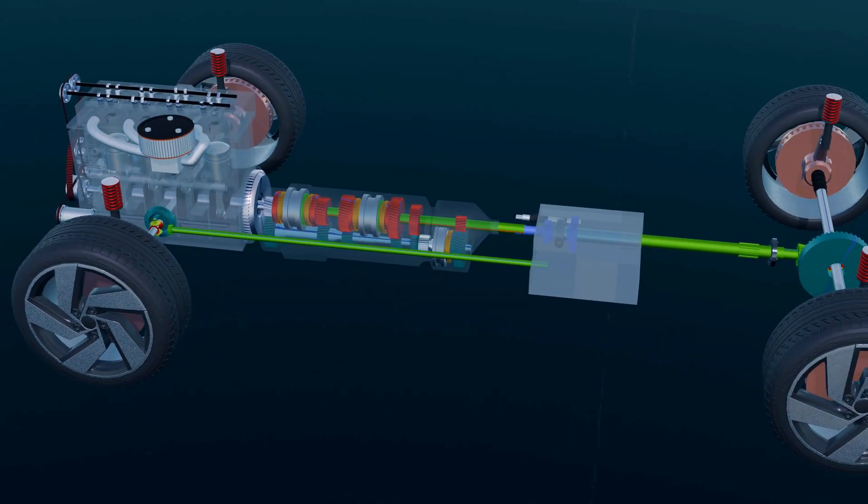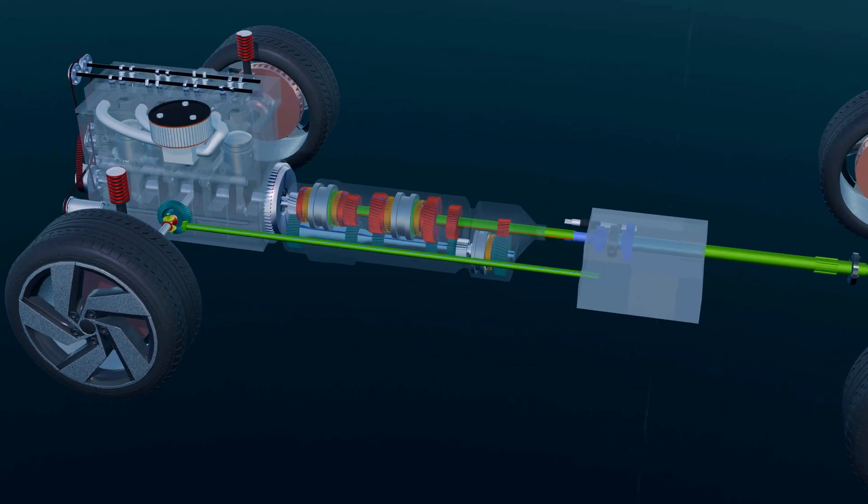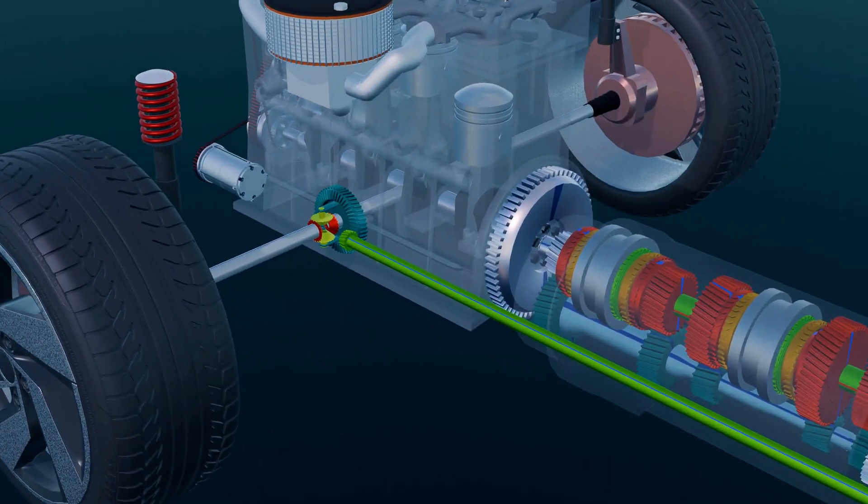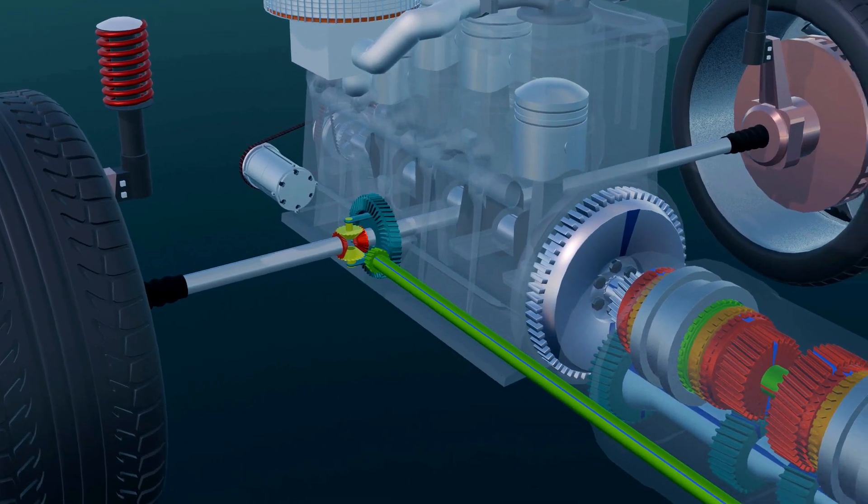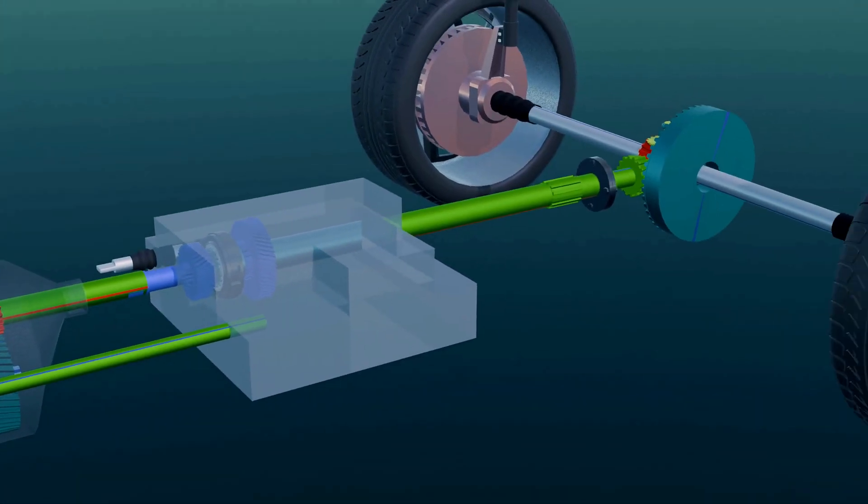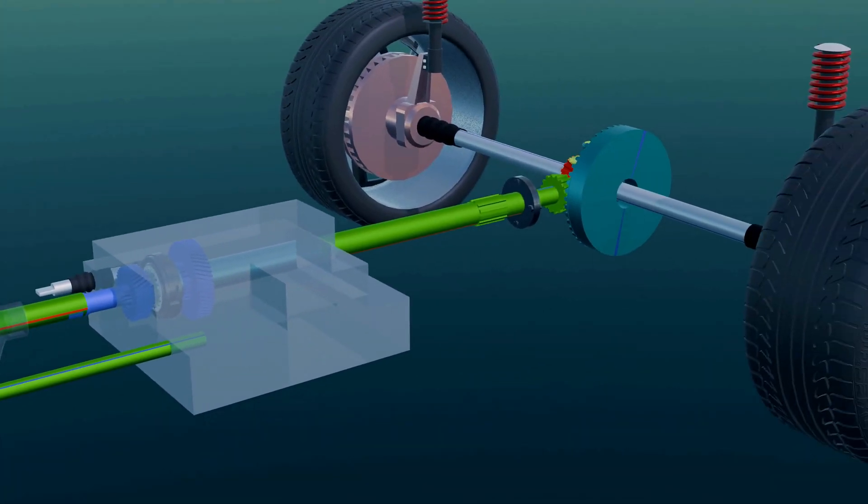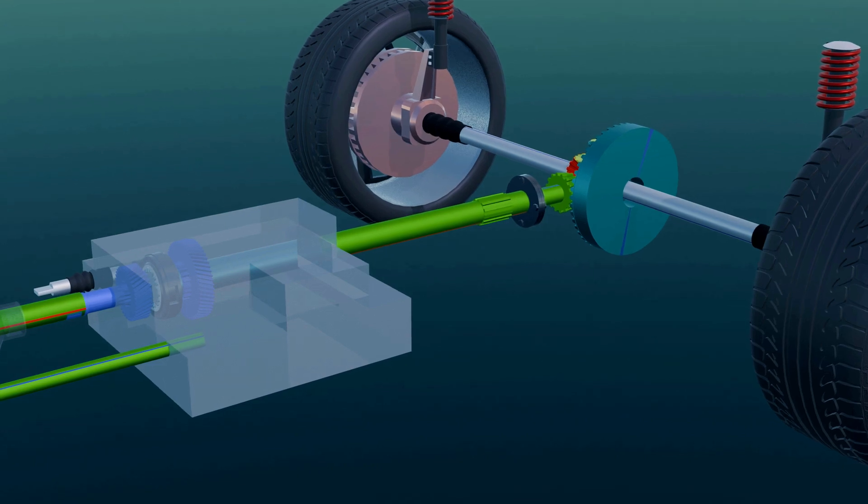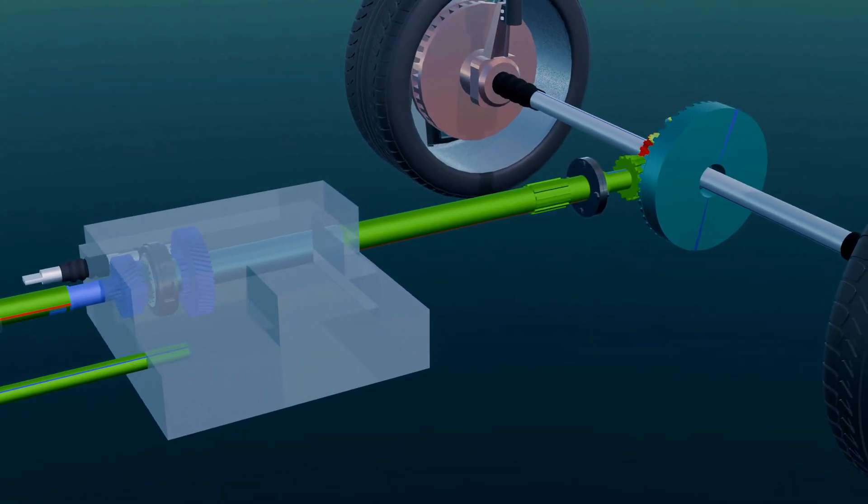The transfer case is crucial in a 4x4 vehicle, and it's responsible for splitting power between the front and rear axles. From the transfer case, one shaft goes to the front differential and another to the rear differential. So, at minimum, a 4x4 vehicle includes two differential units, one for each axle.